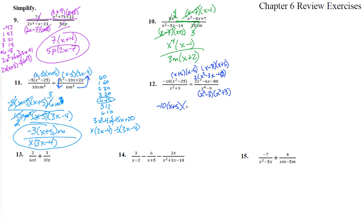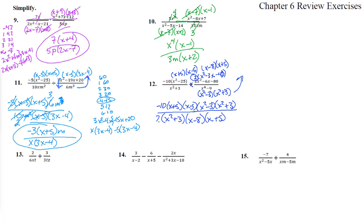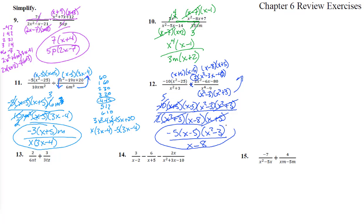Writing it out: negative 10 times x plus 5 times x minus 5 over x squared plus 3, times x squared minus 3 times x squared plus 3 over 2 times x minus 8 times x plus 5. Canceling: x plus 5 gone, x squared plus 3 gone, 10 over 2 leaves 5. Result: negative 5 times x minus 5 times x squared minus 3, all over x minus 8. That's number 12.